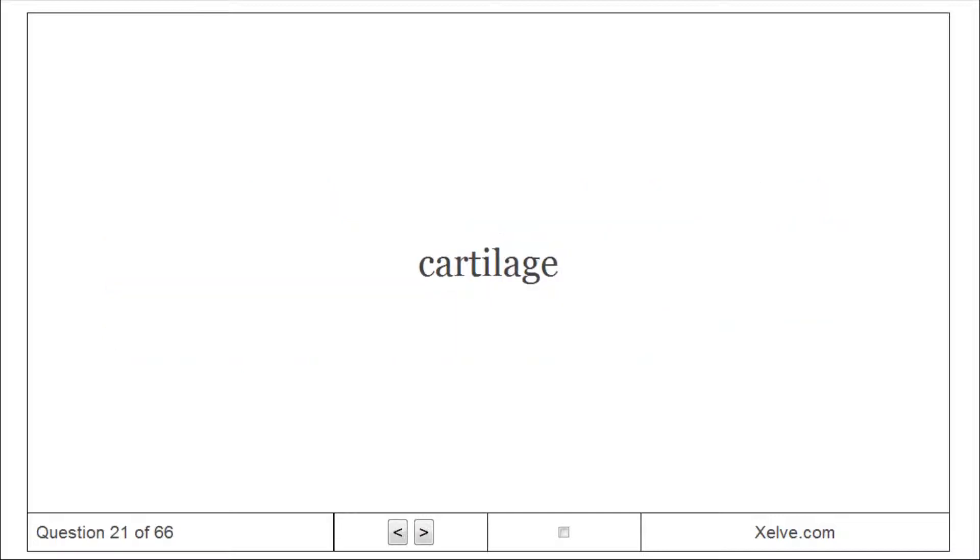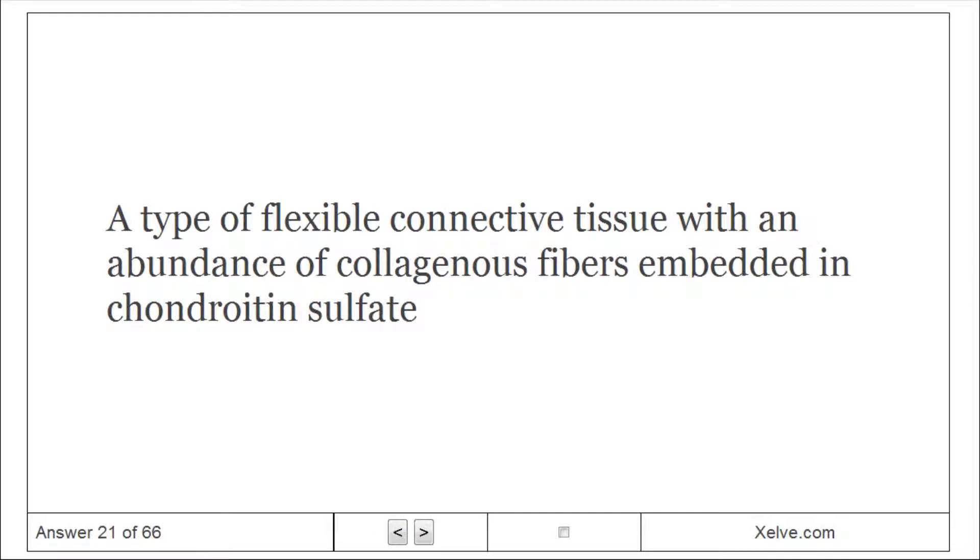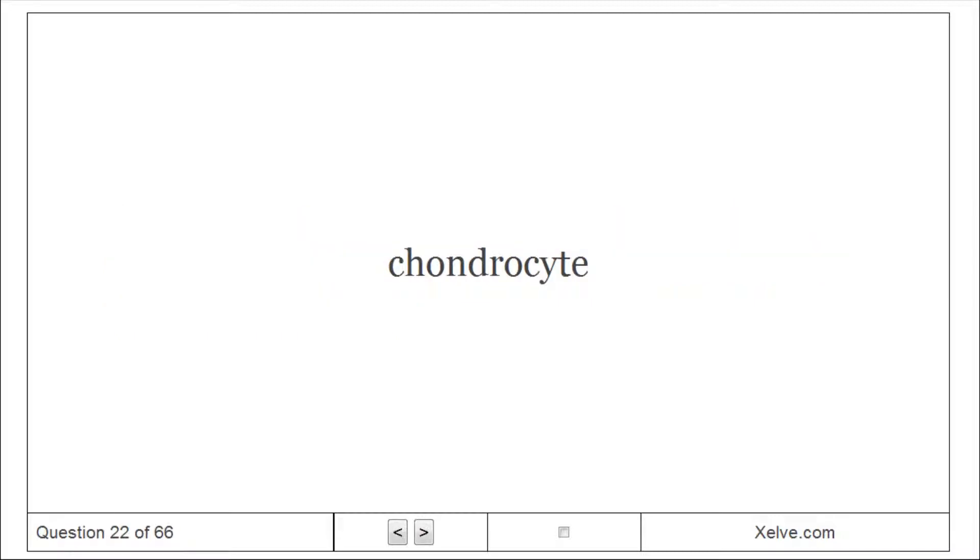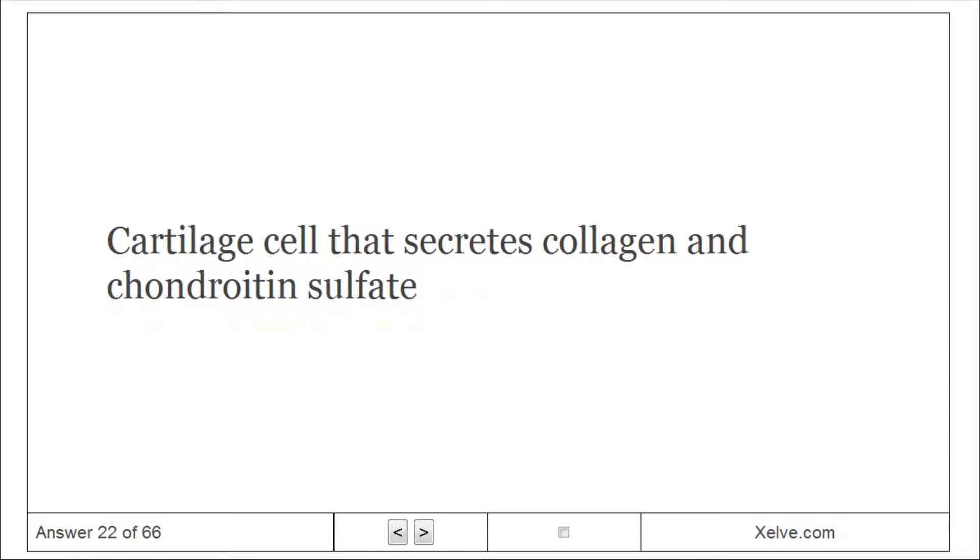Cartilage: A type of flexible connective tissue with an abundance of collagenous fibers embedded in chondroitin sulfate. Chondrocyte: Cartilage cell that secretes collagen and chondroitin sulfate.